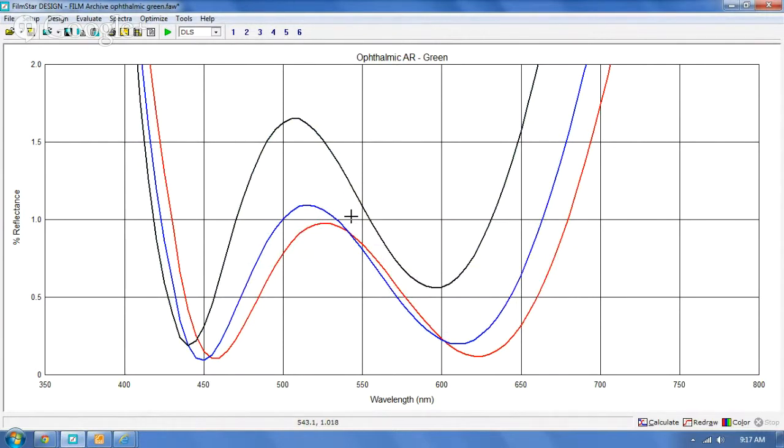And so you'll always see this. There's no way around it. For those of you working in ophthalmics, in the ophthalmics coating lab, you're always going to see this color shift and there's no way around it.